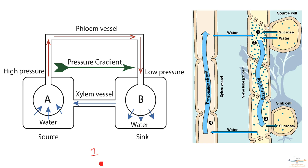In terms of the definition, the mass flow hypothesis states that sugars and amino acids are transported or translocated from a source to a sink down a pressure gradient by mass flow. And the movement is in one direction only. So there's the red arrows showing the direction of the flow and translocation.